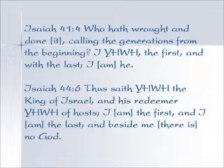In Isaiah 41:4 it is written, 'Who hath wrought and done it, calling the generations from the beginning? I, Yahweh, the first and with the last, I am He.' Yahweh identifies Himself as the first and the last, as Yeshua does. Isaiah 44:6: 'Thus saith Yahweh, the King of Israel, and His Redeemer Yahweh of hosts, I am the first and I am the last, and beside me there is no God.'